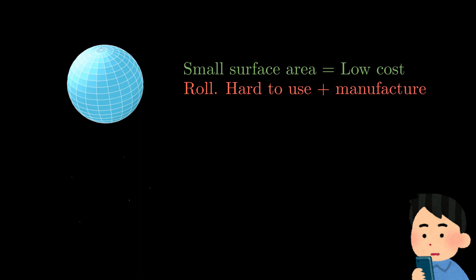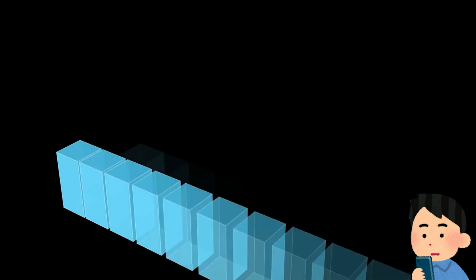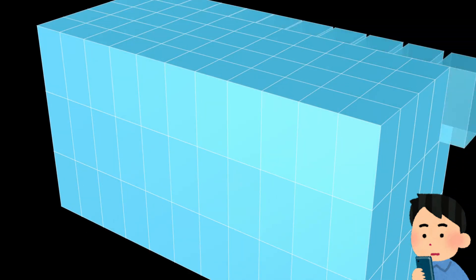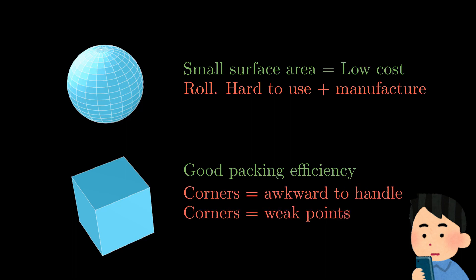What about the cuboid then? The best thing about them is that they are really good at stacking on top of each other with zero space in between, so you can pack and ship them really efficiently. However, having corners is one of their biggest downsides, because the corners can make the can awkward to handle, and also the corners are the weak point that could let the stuff inside leak out.